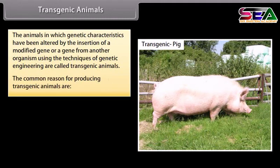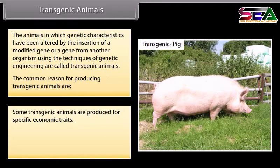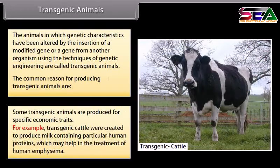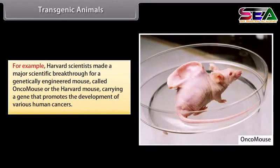The common reasons for producing transgenic animals include specific economic traits. For example, transgenic cattle were created to produce milk containing particular human proteins that may help in the treatment of human emphysema. Harvard scientists made a major scientific breakthrough with a genetically engineered mouse called Oncomouse, or the Harvard mouse, carrying a gene that promotes the development of various human cancers.